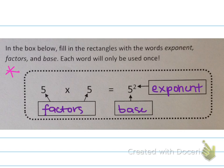Both 5s on the left are factors. The 5 on the right is the base, and the 2, the little 2 up top, is the exponent.